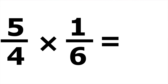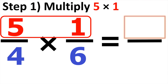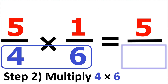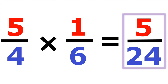Number eight, we have five over four times one over six. Looking at the numerators, five times one is equal to five. Looking at the denominators of four and six, four times six is equal to twenty-four. So the answer is five over twenty-four.